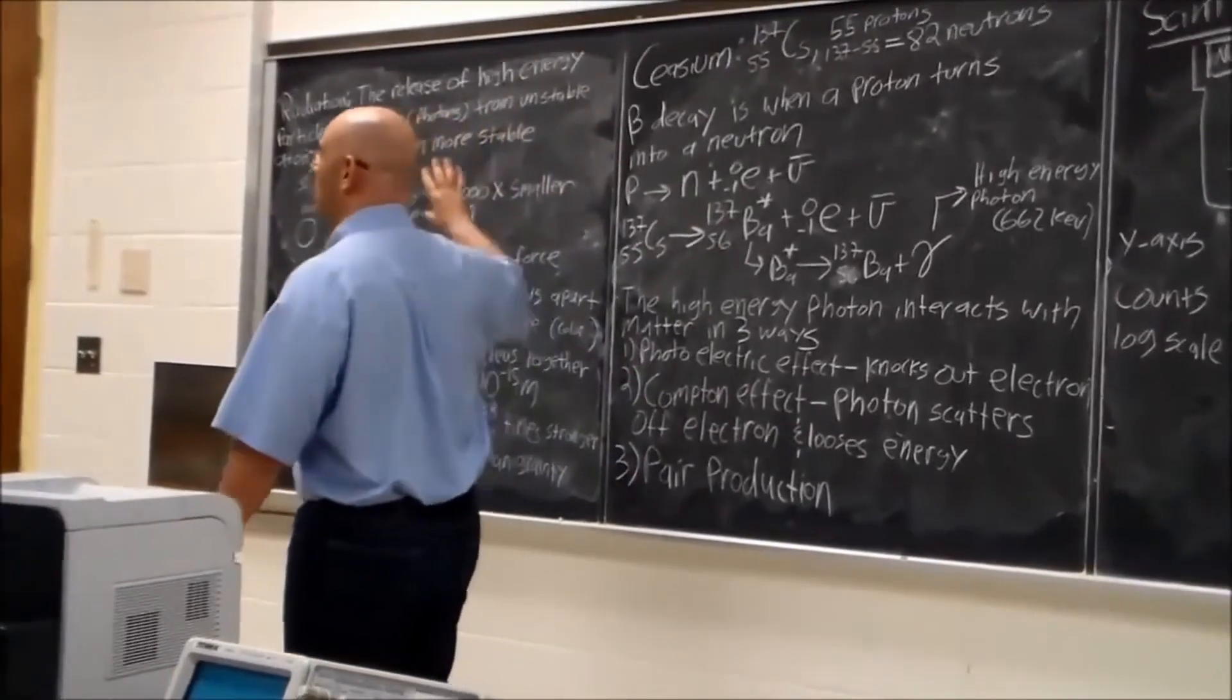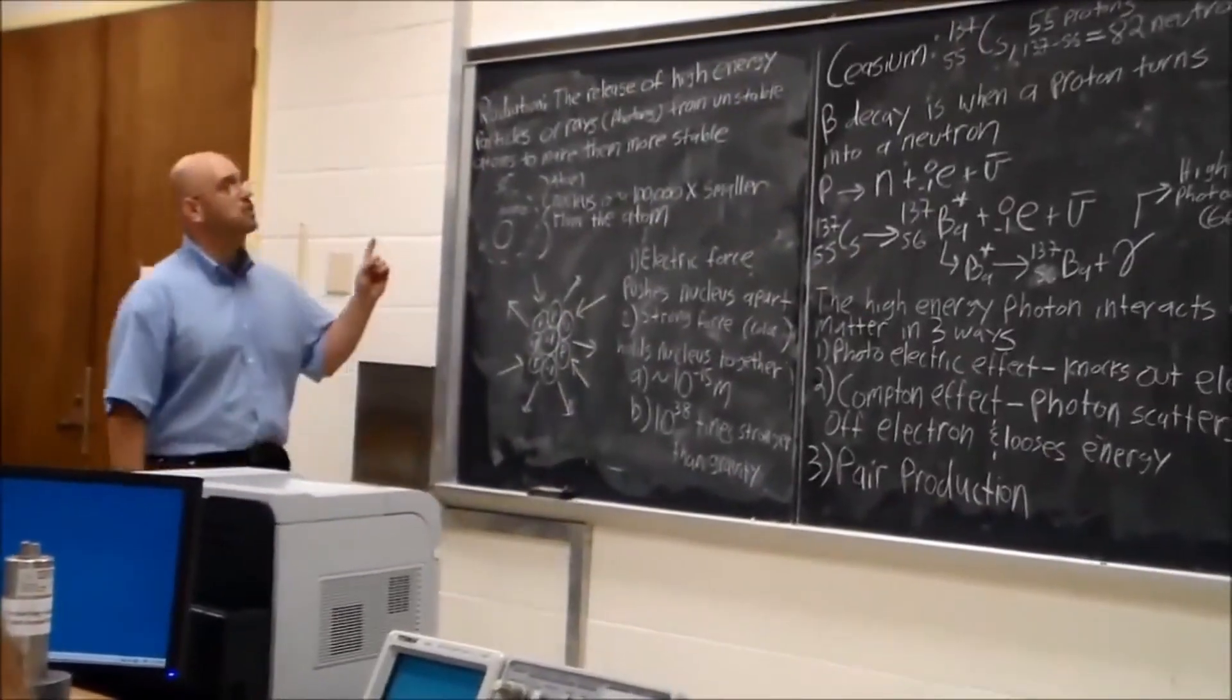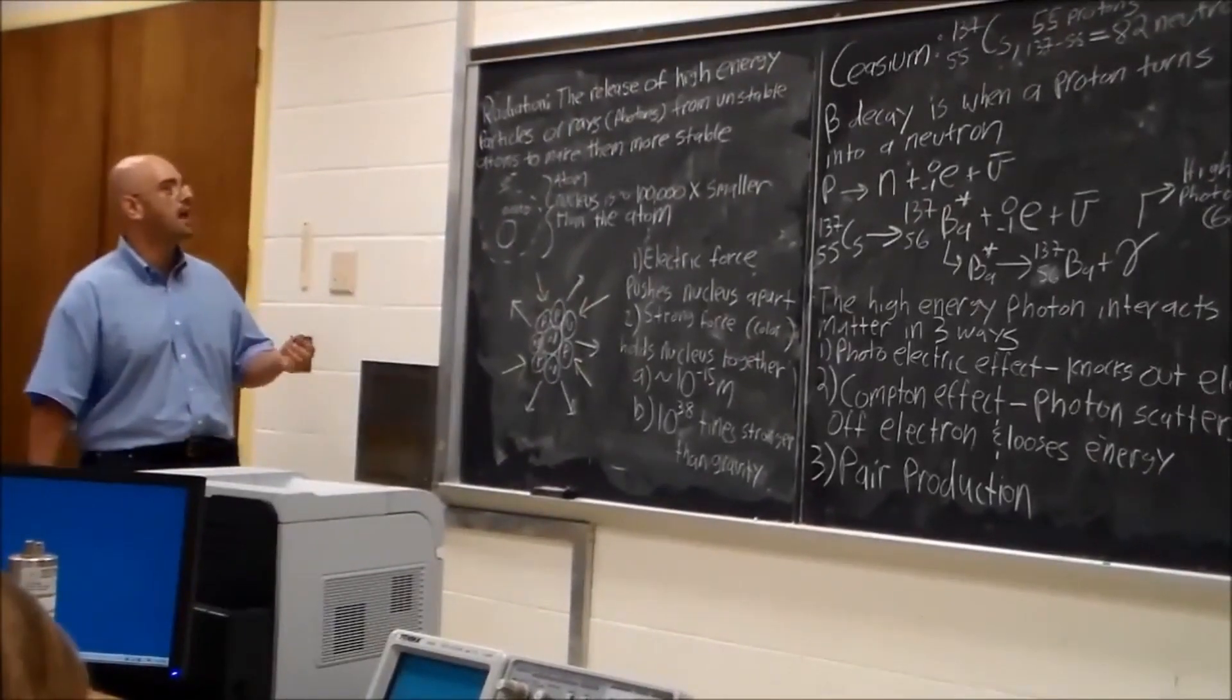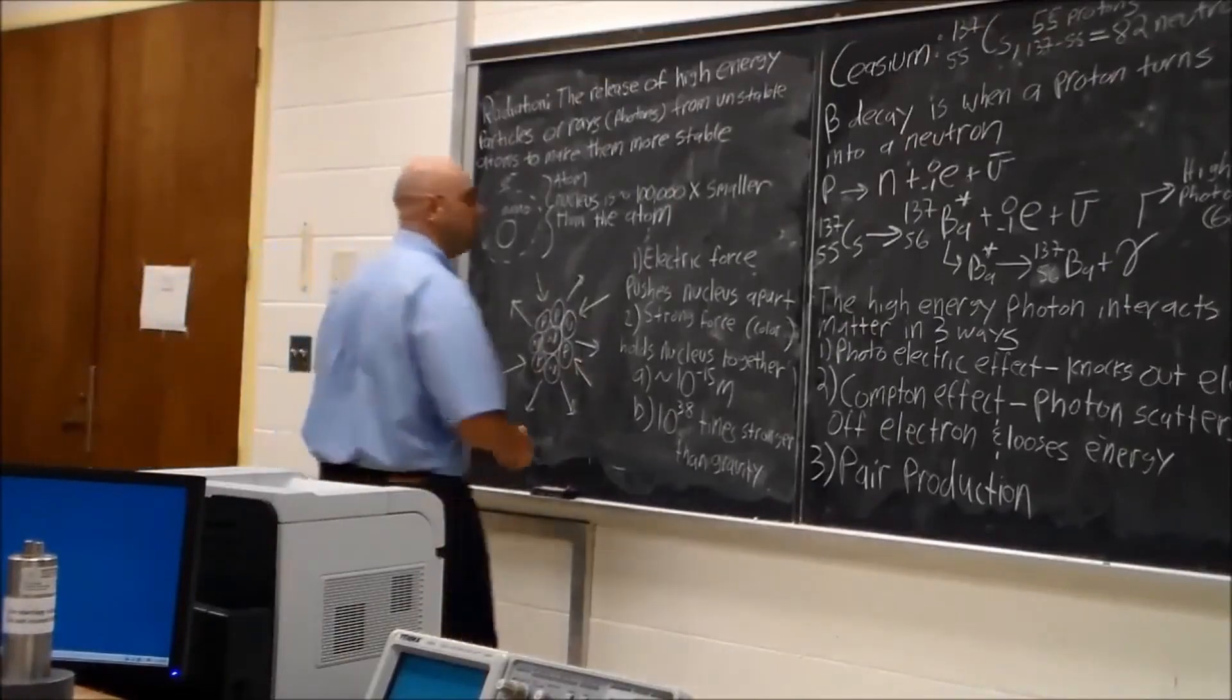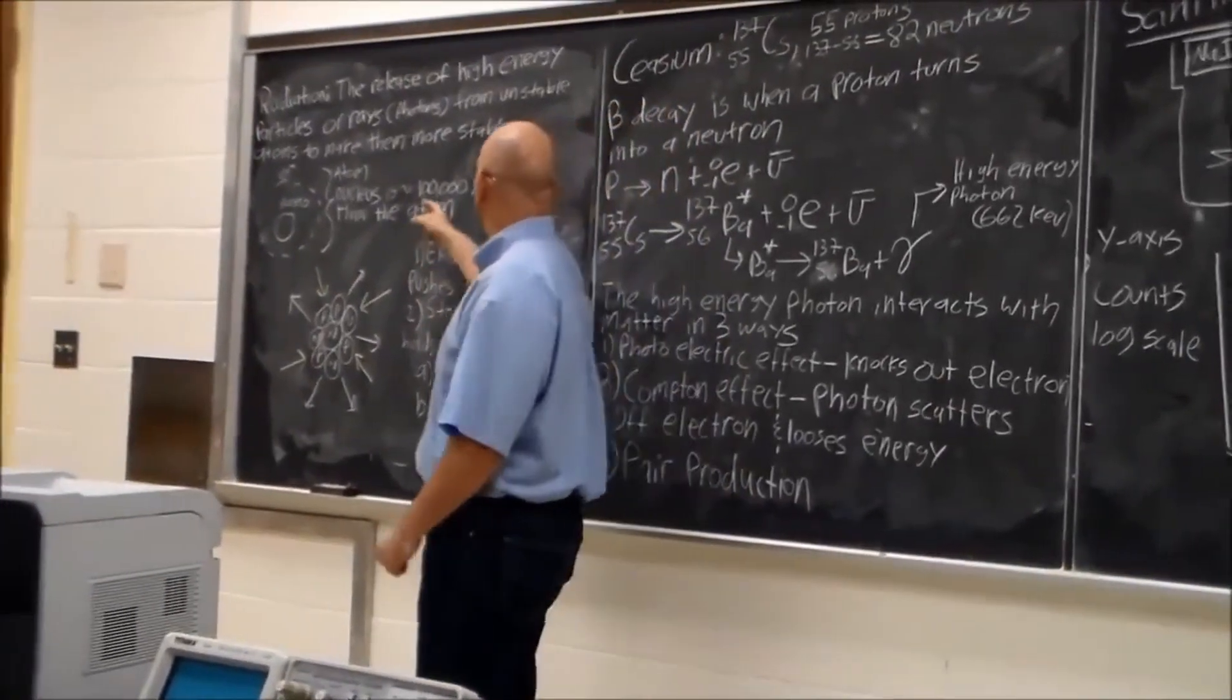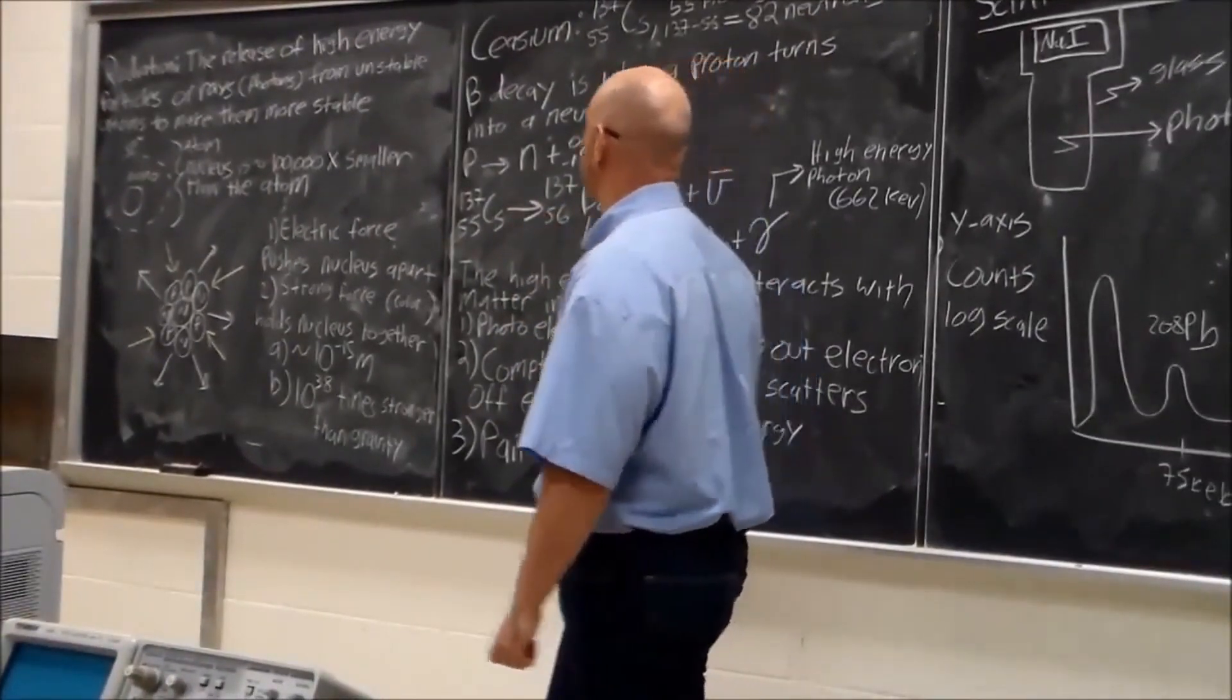So I'm going to go over a little overview of the concepts of today's lab, which I've written on the board. So what we're learning about, the lab's about radiation. So radiation is the release of high-energy particles or rays called photons from unstable atoms, and that makes them more stable. So as you all know, an atom has a small nucleus and a cloud of electrons on the outside, and the nucleus is about 100,000 times smaller than the atom. And also about 99% of the mass and all the energy is in the nucleus.